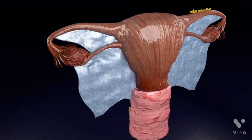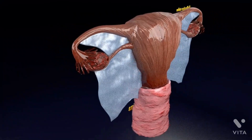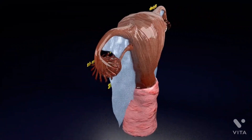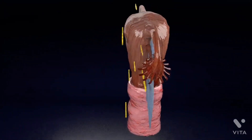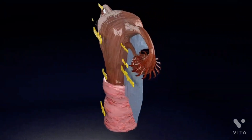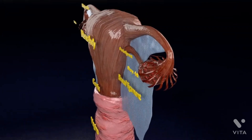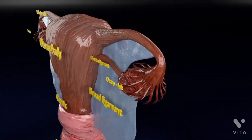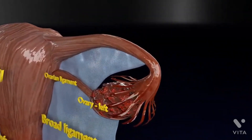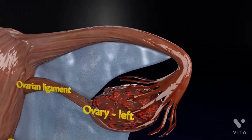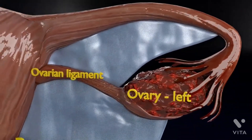The external sex organs are also known as genitals. These are the organs of the vulva, including the labia and clitoris, and the vaginal opening.